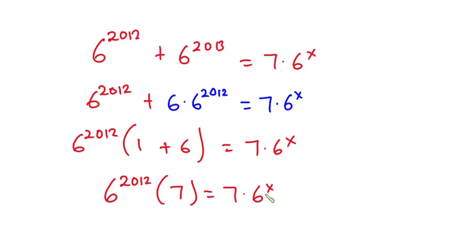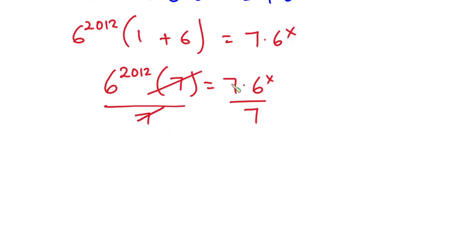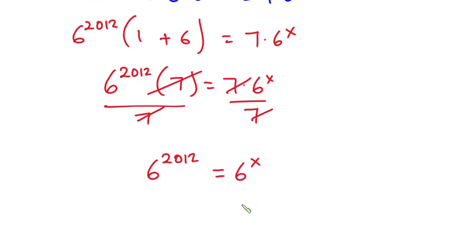Now let's divide each side of this equation by 7, so the 7s cancel on both sides. We are left with 6 to the power 2012 is equal to 6 to the power x.